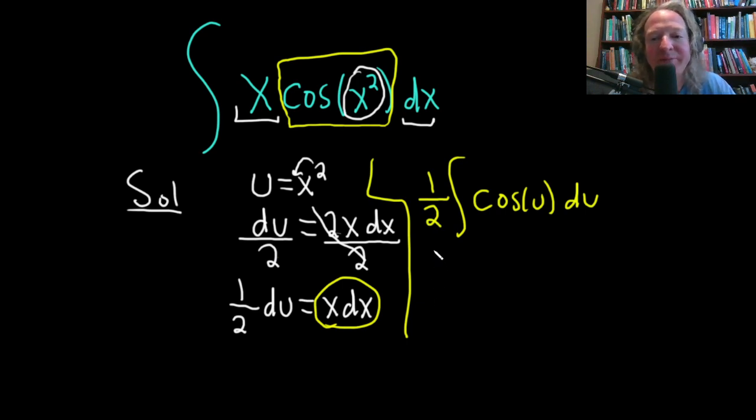All right, now we're ready to integrate. So we're looking for a function whose derivative is cosine, right? Because we're anti-differentiating. So basically sine, because the derivative of sine is cosine. So this is 1 half sine of u, and then plus our constant of integration, capital C.